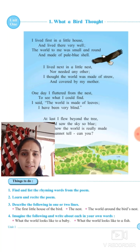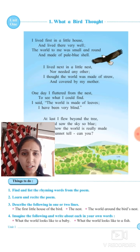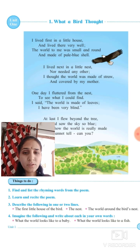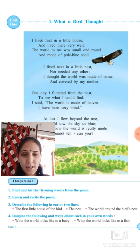And he saw around — usne apne side mein dekha. That world was small and round — uski jo duniya thi, uska jo ghar tha, woh small and round tha. Small means chhota, and round means yani gol tha.